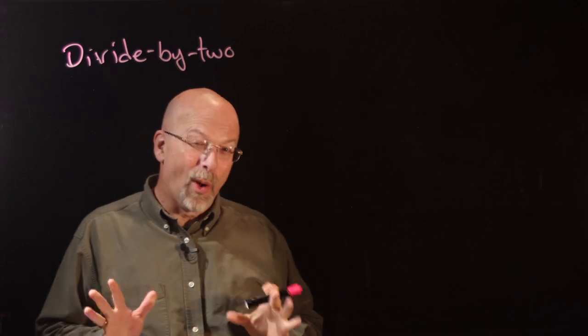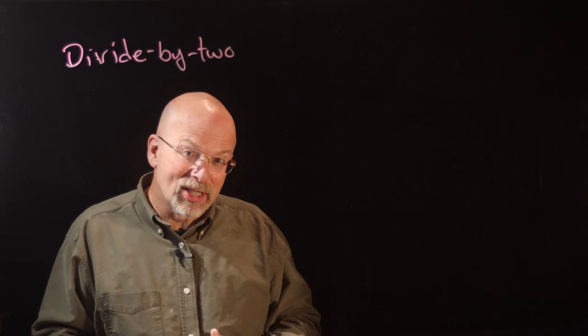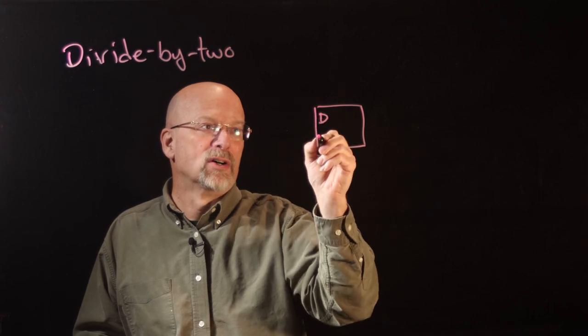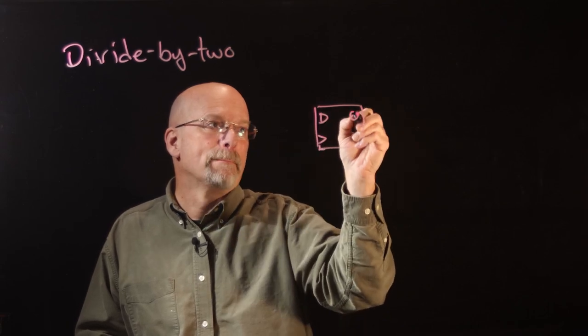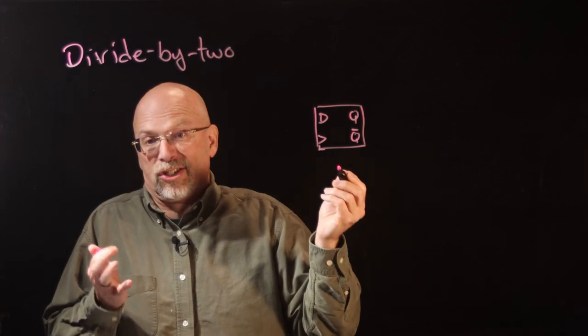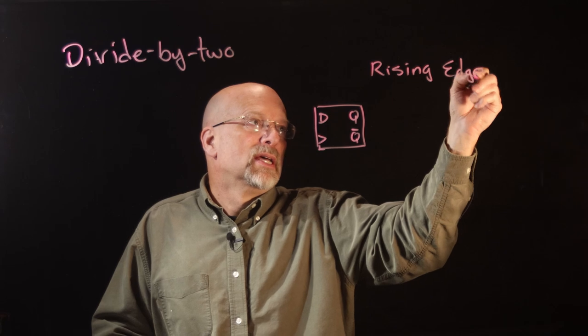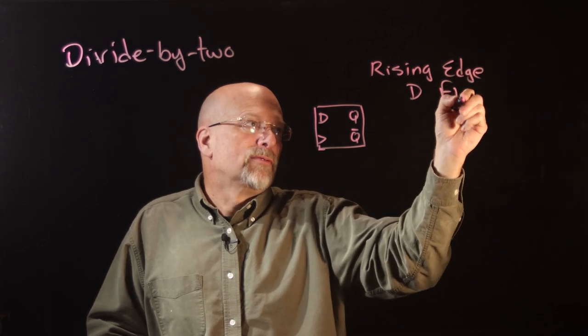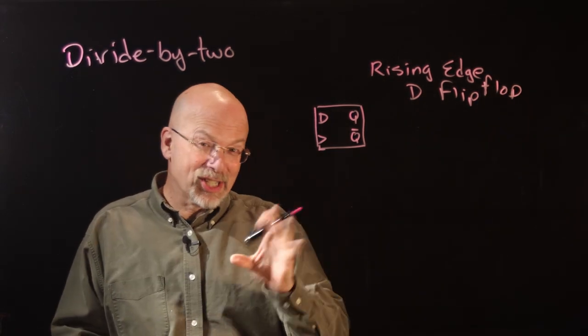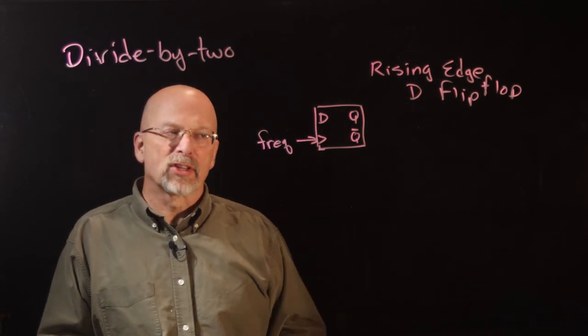The divide by two circuit is actually quite simple. May take a little bit of close examination to figure out exactly how it works, but truly it is done with a single D flip-flop. So we have this D flip-flop, and I'm just going to pick, let's just say rising edge. So we've got this rising edge D flip-flop. Now the way the circuit works is quite simple. You have the driving frequency going into the clock.